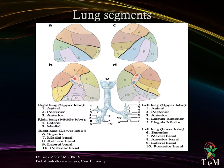The left lung consists of nine segments. The upper lobe consists of the apicoposterior segment, anterior segment, lingular superior segment, and lingular inferior segment. The left lower lobe consists of five segments: the superior, medial basal, anterior basal, lateral basal, and posterior basal.